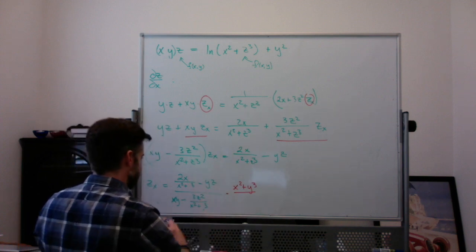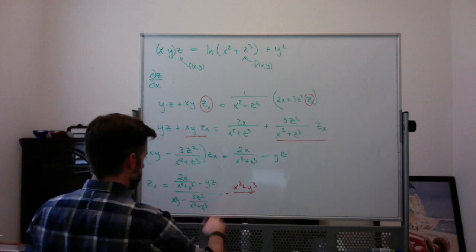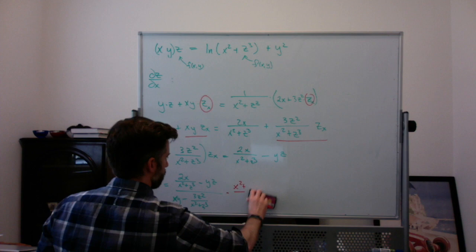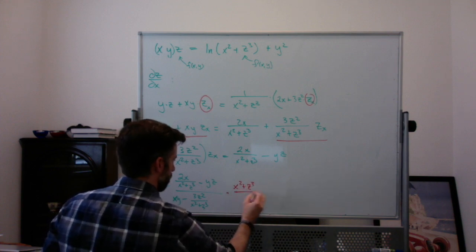That's a z. That's a z. Okay. So it should be times x² + z³ over the same thing.